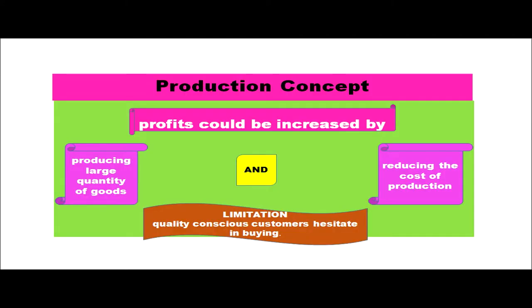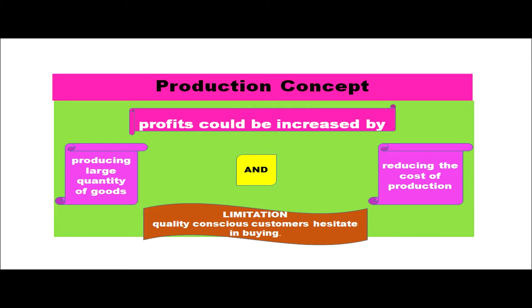Now let's see the philosophies of marketing. The first philosophy is the production concept. In the production concept, it is assumed that profits could be increased by producing large quantities of goods and by reducing the cost of production. It is believed that if we produce more goods, make them easily accessible to all consumers, and reduce the price, we can increase sales and profits. But one limitation is that quality-conscious customers hesitate to buy these cheap variety products.